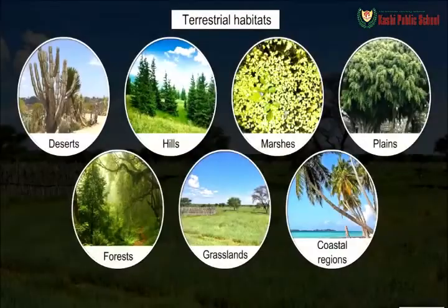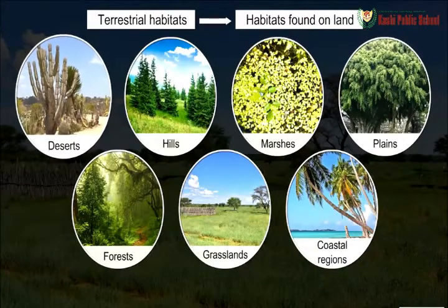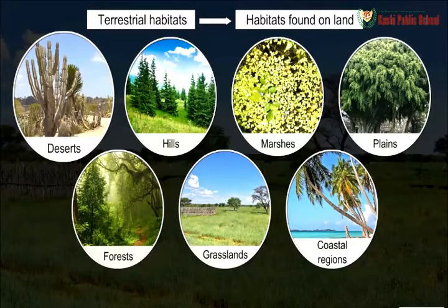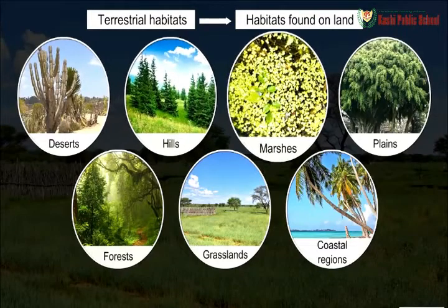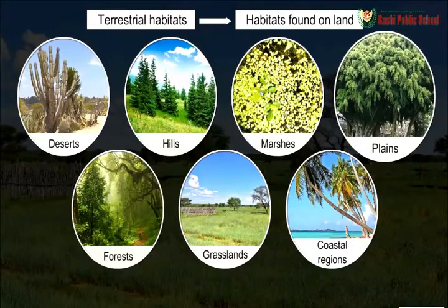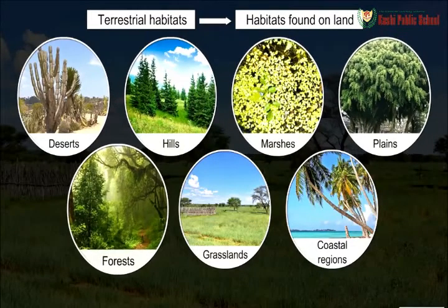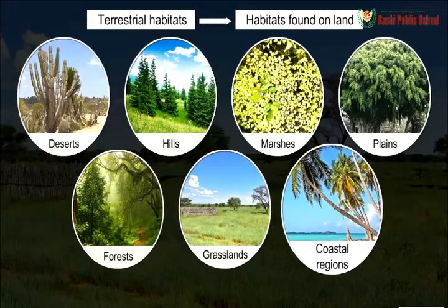Terrestrial habitats are the habitats found on land. These include deserts, hills, marshes, plains, forests, grasslands, and coastal regions.